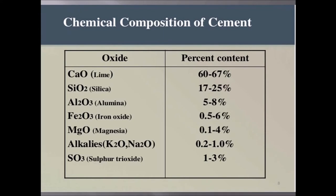What are the chemical compositions of cement? Cement comprises of lime about 60 to 67 percent, silica about 17 to 25 percent, alumina about 5 to 8 percent, iron oxide about 0.5 to 6 percent, magnesia between 0.1 to 4 percent, alkalis 0.2 to 1 percent, and lastly sulfur trioxide in the range of 1 to 3 percent.